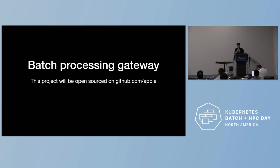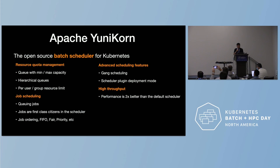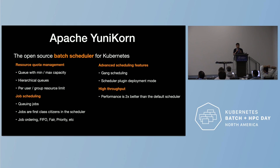The batch processing gateway will be open sourced as well — I encourage anyone interested to search for this project on GitHub. The second major challenge is job scheduling, which is where Unicorn fits in the picture.